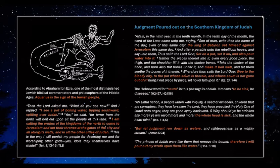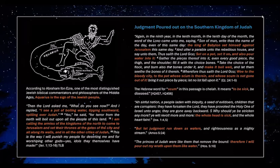"But let judgment run down as waters, and righteousness as a mighty stream." As I've mentioned before, many of these constellations have dual applications — it's not just one thing. Water can be a blessing; it can also be a curse. It could be righteousness being poured out as a mighty stream into his people, and that would be a good thing too. But judgment comes first. "Therefore, I will pour out my wrath upon them like water."